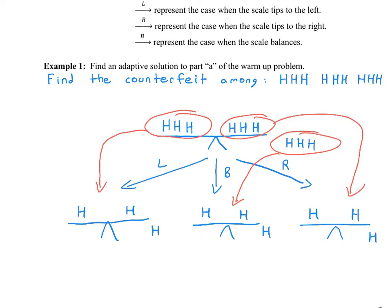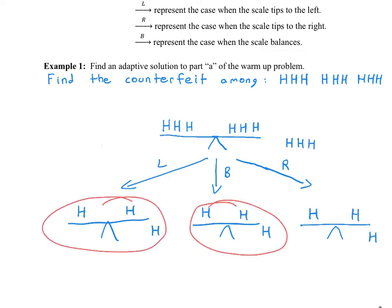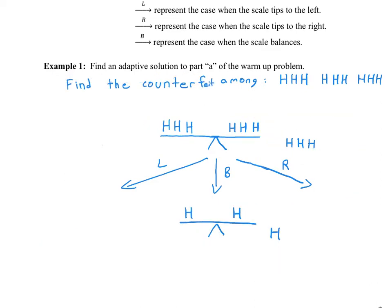We can use a more convenient notation. In each of the three cases we're doing the same thing, so we can combine them all into one case and combine the arrows into one as well — they're symmetric. We'll allow ourselves to write an arrow with an L, an R, and a B. In all three cases — tipping left, tipping right, or balancing — we do the same thing. This displays a mathematical way to solve this searching problem.